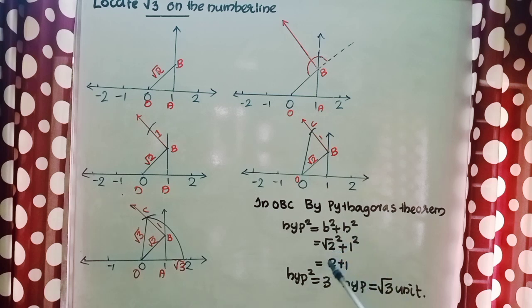That is equal to 2 plus 1, that is hypotenuse square equal to 3, hypotenuse equal to root 3 unit. So we got the length of OBC is root 3 unit.